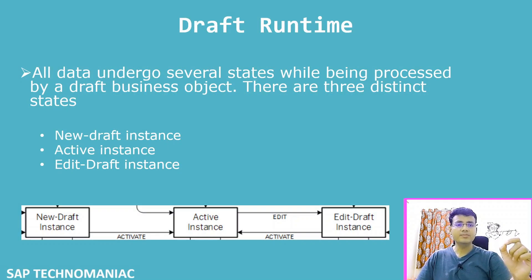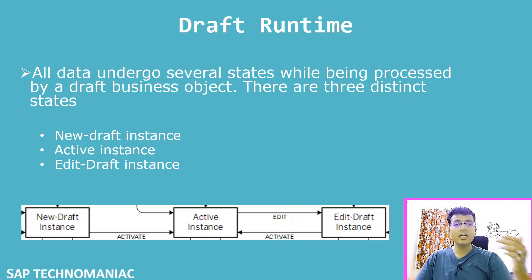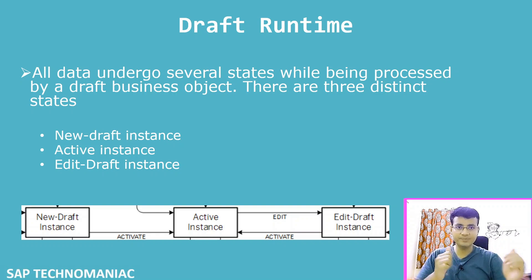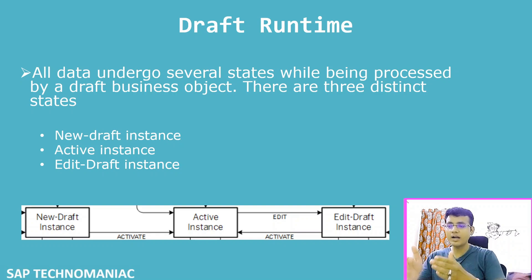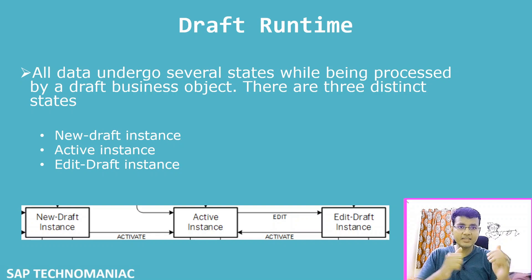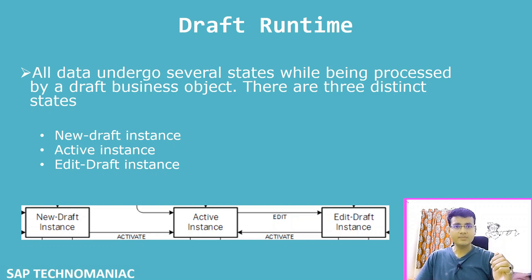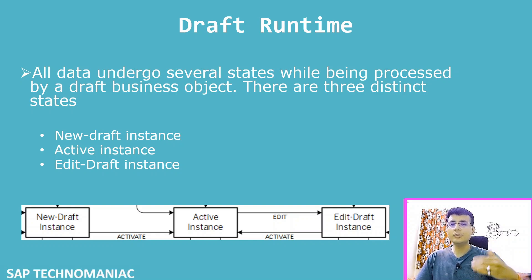Whenever we work with the draft business object, each and every data which we create in the system will go through different states. There are mainly three states: first is the new draft instance, second is the active instance, and third is the edit draft instance.